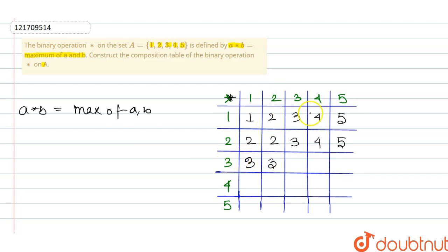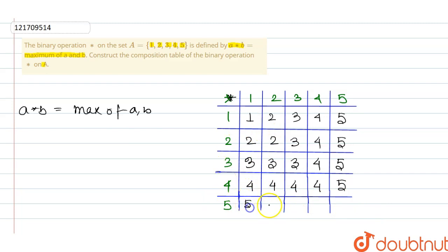4 composition 1 equals 4, 4 composition 2 equals 4, 4 composition 3 equals 4, 4 composition 4 equals 4, 4 composition 5 equals 5. Then 5 composition 1 equals 5, 5 composition 2 equals 5, 5 composition 3 equals 5, 5 composition 4 equals 5.